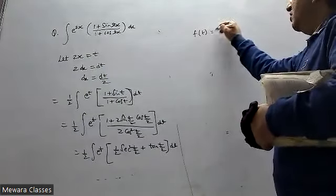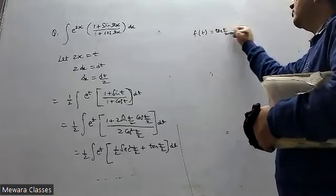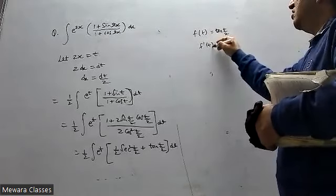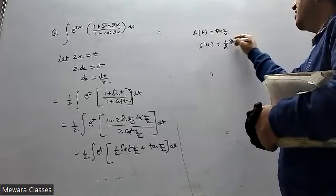So f(t) equals tan t by 2, and f'(t) equals 1 by 2 sec square t by 2.